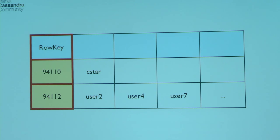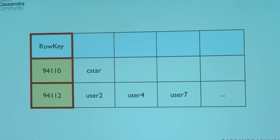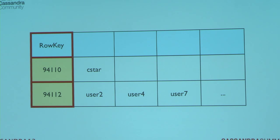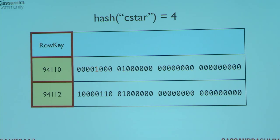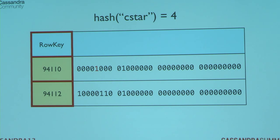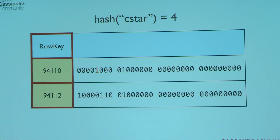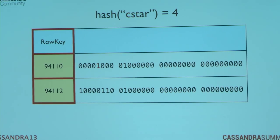This is your standard inverted index, where I have an index name and store which users are using 94110 as their zip code. In order to make this a more tractable, single-machine problem, you want to encode that as a bit array. For 94110, I run the user's ID through a hash function — out comes the number four — so I set the fourth bit to one, meaning row four has a value of 94110 as the zip code.